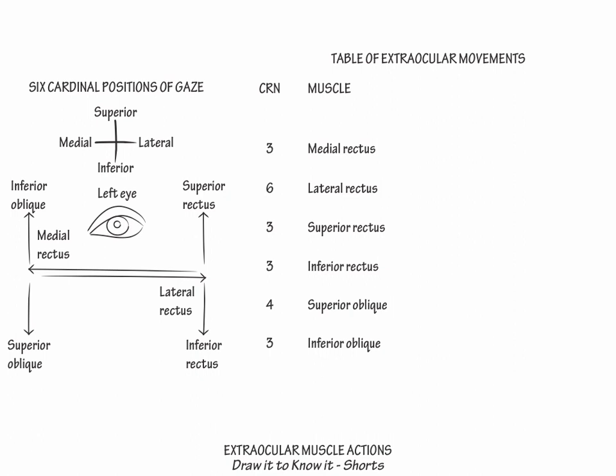Next, let's complete our eye muscle actions table. Across the top row write primary action, secondary action, and tertiary action. The muscle's chief action in primary position — meaning looking straight ahead — is its primary action, and the muscle's secondary and tertiary actions are its additional rotational effects on the eye.